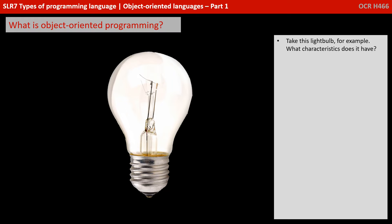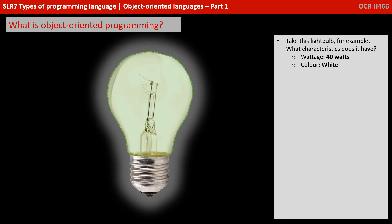Let's take this light bulb. What characteristics does it have? You could say one of its characteristics is its wattage — let's say 40 watts. Its colour, so white. Its type, so we've got a filament bulb. Its connection type, so in this case a screw fixing.